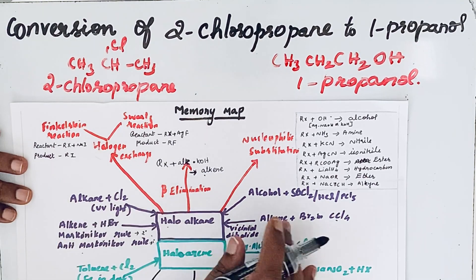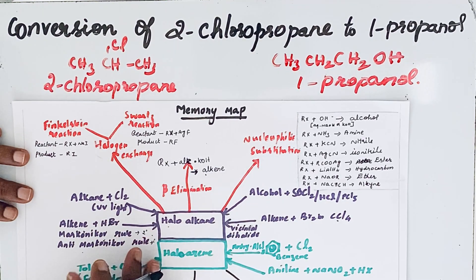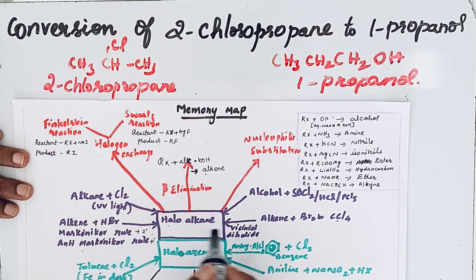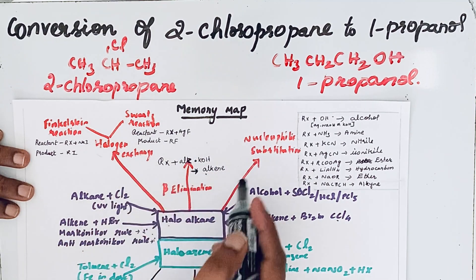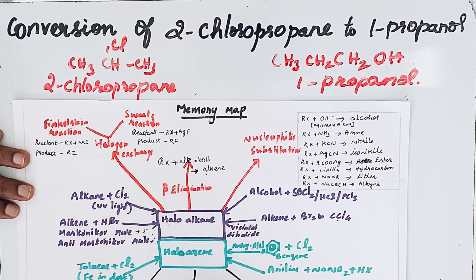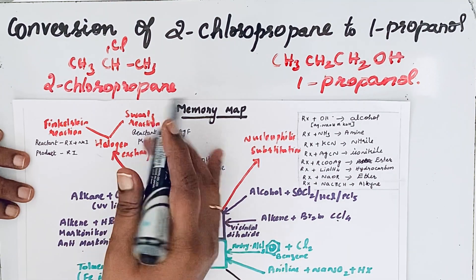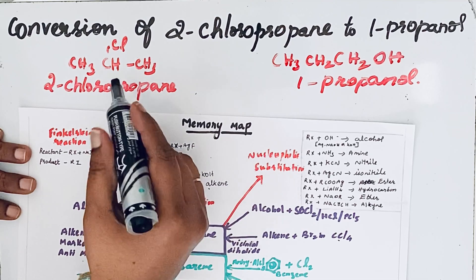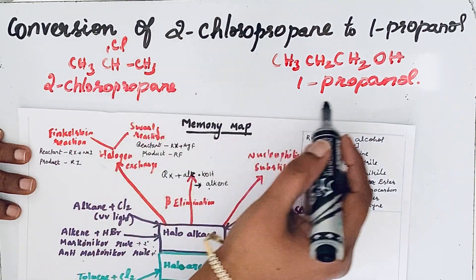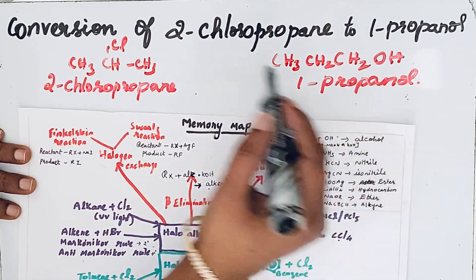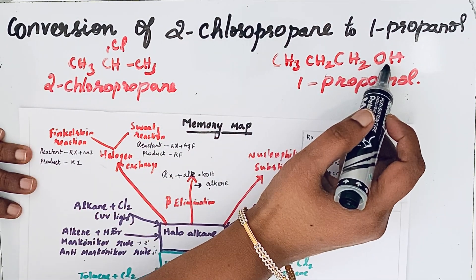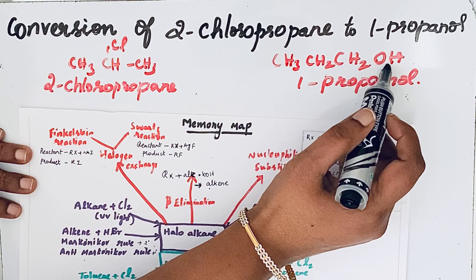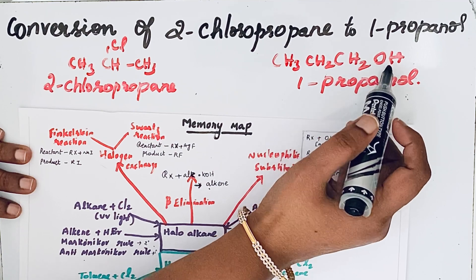The purple color shows the preparation of haloalkanes, and the red color shows reactions involving haloalkanes. Comparing 2-chloropropane and 1-propanol, there is the presence of an OH group, which means a nucleophile is present.